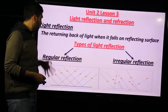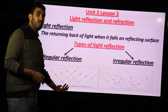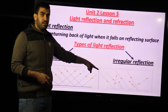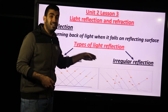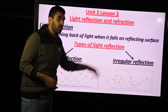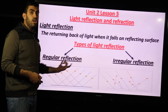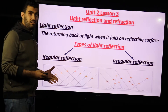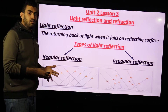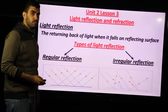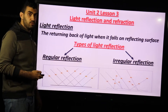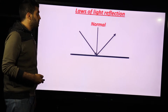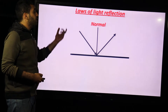In the case of regular reflection, all the incident light rays are reflected in only one direction. But in the case of irregular reflection, the incident rays are reflected in many different directions. Regular reflection is produced mainly by a mirror, stainless steel, or a foil sheet. Irregular reflection is produced by skin, wood, or any rough surface.